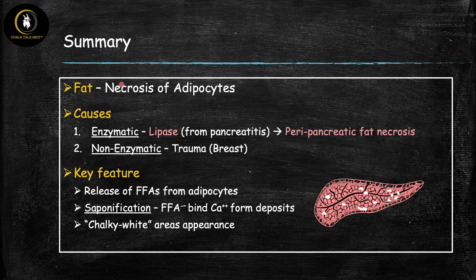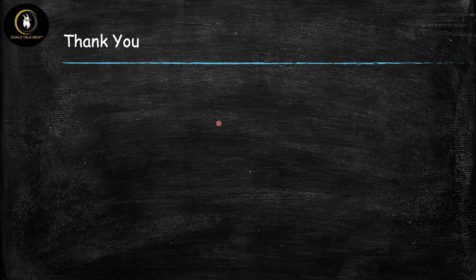In summary: fat necrosis is necrosis of adipocytes. There are two main causes. First, enzymatic — mediated by lipase secreted by the pancreas — causing peripancreatic fat necrosis as a consequence of pancreatitis, which is itself a liquefactive necrosis. Second, non-enzymatic — mainly due to trauma to adipocytes, primarily in the breast. Key features include release of free fatty acids, saponification where those fatty acids bind calcium forming deposits, and a chalky white appearance on gross pathology. Thanks for watching — check out the related videos and drop comments for feedback!